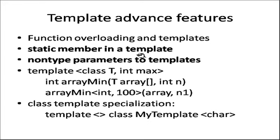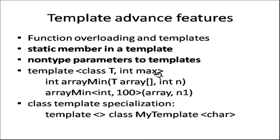Static member in a template: if we are creating a static member in a template, that member function is assigned global memory, and the variable data types of the static member function are globally available according to the type sent by the main function. Non-type parameter to template: non-type parameter means if we are using int max, there is no type T — it is considered a typed parameter defined by the user. So int array uses T for the array type, and int n is a simple fundamental data type non-type parameter. For calling: handled<Array<int>, 100> n1.